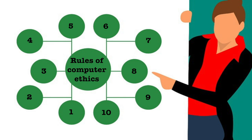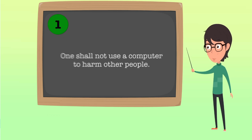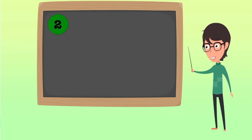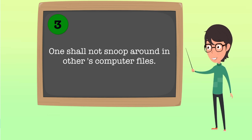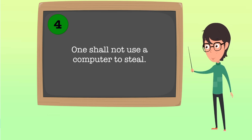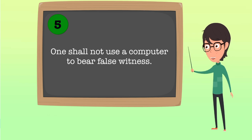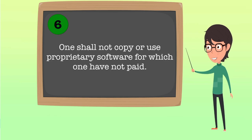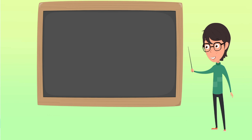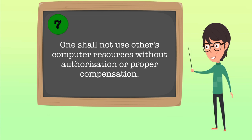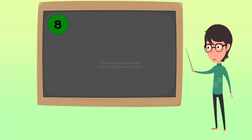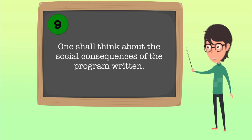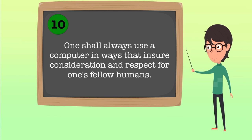One should always remember the ten rules of computer ethics. One: do not use a computer to harm other people. Two: do not interfere with others' computer work. Three: do not snoop around in others' computer files. Four: do not use a computer to steal. Five: do not use a computer to bear false witness. Six: do not copy or use proprietary software for which you have not paid. Seven: do not use others' computer resources without authorization or proper compensation. Eight: do not appropriate others' intellectual output. Nine: think about the social consequences of the programs you write. Ten: always use a computer in ways that ensure consideration and respect for your fellow humans.